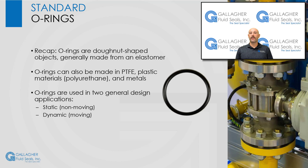Chapters 1 to 3 of this O-ring video series provide information on the standard O-ring. As a review, an O-ring is a donut-shaped object generally made from an elastomer, but can also be made in PTFE, plastic materials, and metals. O-rings are generally used in two design applications: static or stationary, and dynamic or moving. The conventional type of O-ring may be used in almost any application if the gland containing the seal is designed correctly and the proper size and material is chosen.